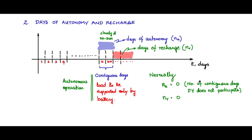Nr also will be normally zero, and it is the number of days to replenish the charge lost during autonomous operation.